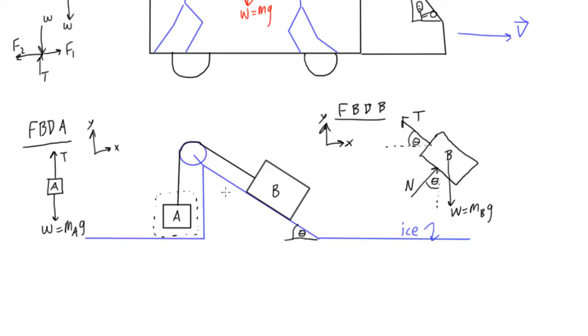So now we would have enough information that we could actually solve this problem if we were given the mass of block A and B. Because we know that for both of them, the sum of forces in the x direction is 0, the sum of forces in the y direction is 0.